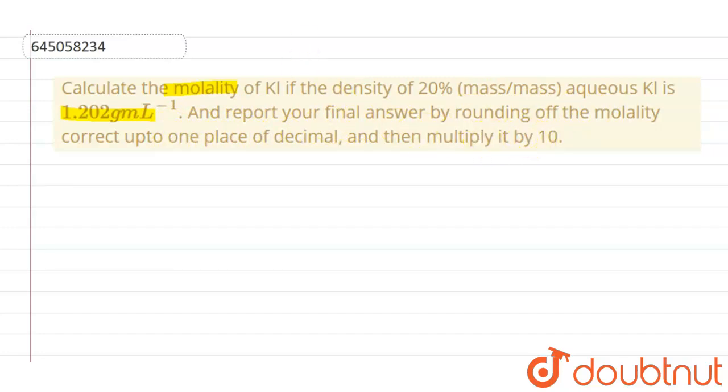So, let's start the solution. Here it is written 20% mass by mass aqueous KI. So, it means 20 gram of KI is dissolved in 100 gram of solution.